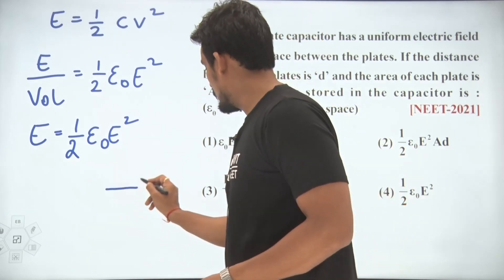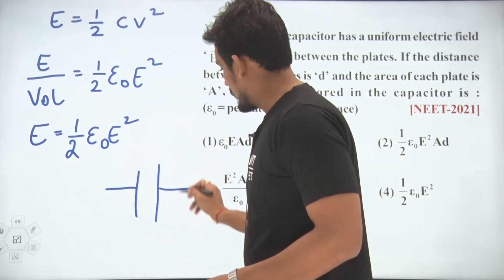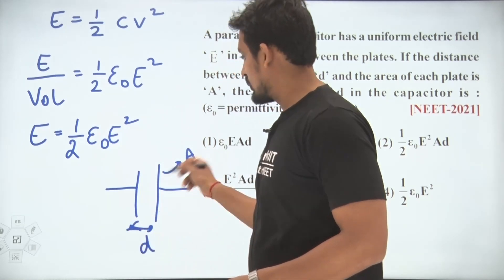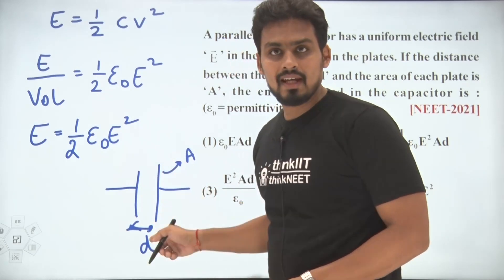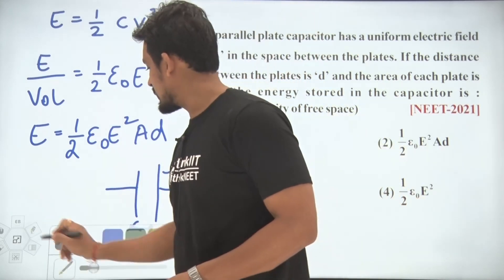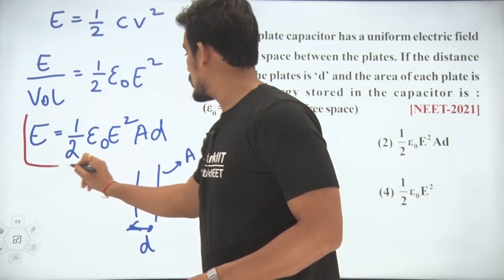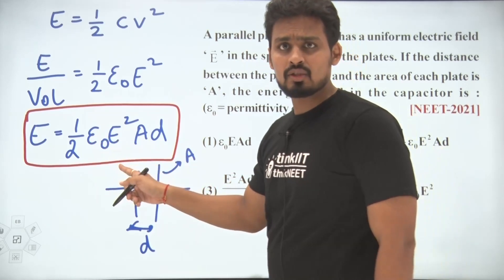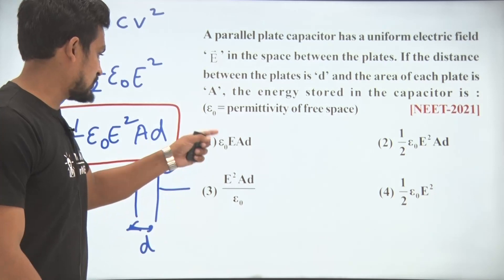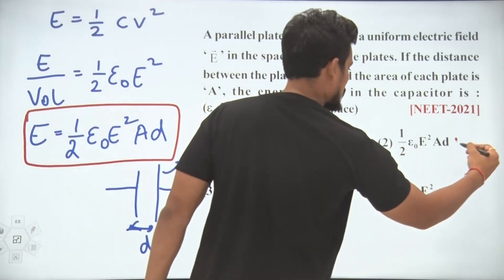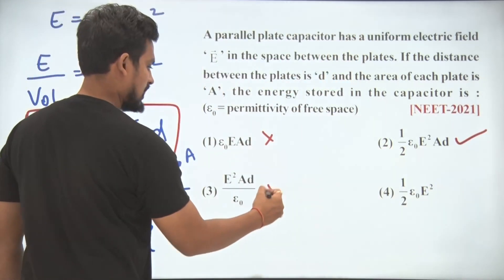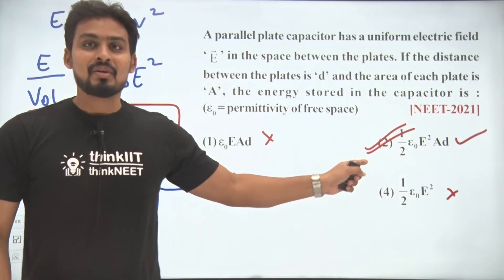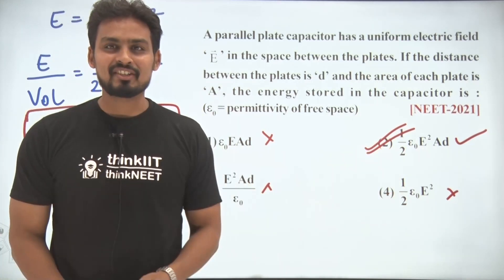The volume of the capacitor is plate area A multiplied by separation d, so volume equals A·d. Therefore the energy stored equals ½ε₀E²·A·d. Looking at the options, option 1 is wrong, option 2 is correct, and options 3 and 4 are wrong. The final answer is option 2. Thank you.